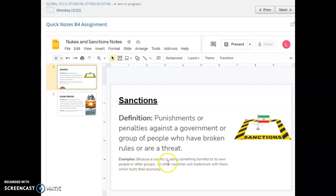So for an example, because a country is doing something harmful to its own people, like we've been learning about in Iran or other groups. So those things, how they're having those proxy wars and kind of messing up conflicts in other countries. So because of that, no other countries will trade or work with them, which hurts their economy.